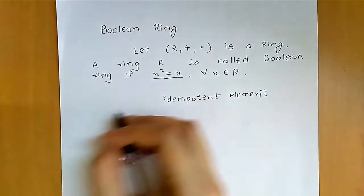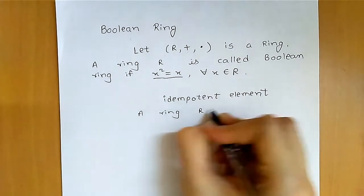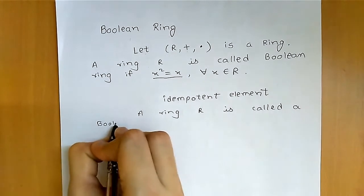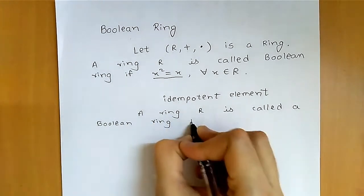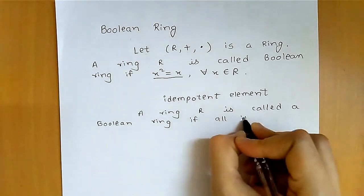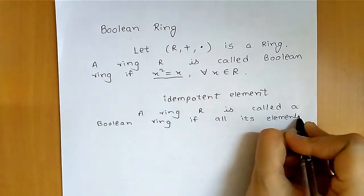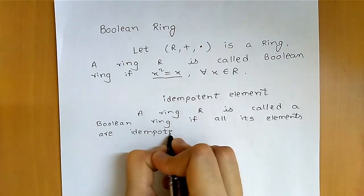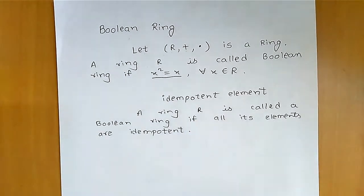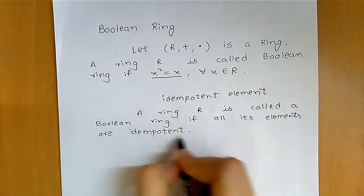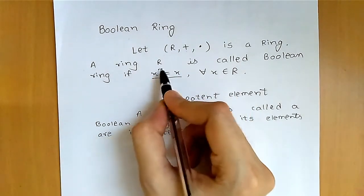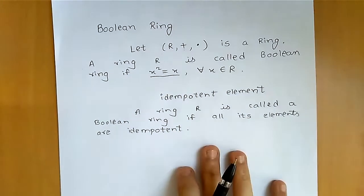This property x squared equals x means idempotent — whatever element satisfies this property is called an idempotent element. So another definition: a ring R is called a Boolean ring if all its elements are idempotent. That means every element present in R satisfies x squared equals x for all x belonging to R.